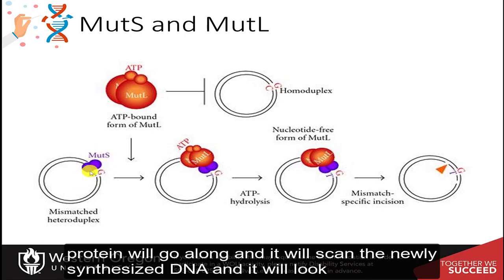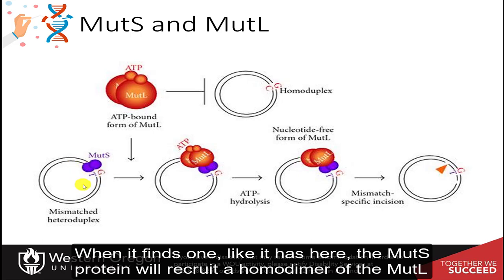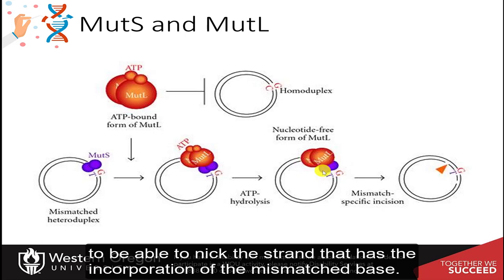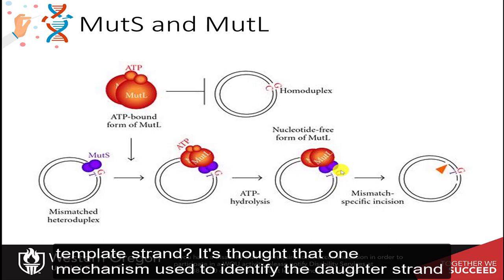The MutS protein will scan the newly synthesized DNA and look for these mismatches within the sequence. When it finds one, the MutS protein will recruit a homodimer of the MutL protein that is bound to two molecules of ATP. ATP hydrolysis is used to nick the strand that has the incorporation of the mismatched base. So how does it recognize which strand is the daughter strand and which strand was the template strand?